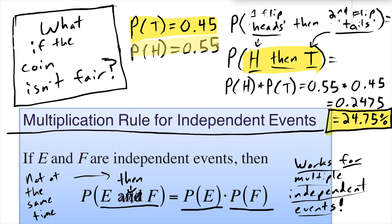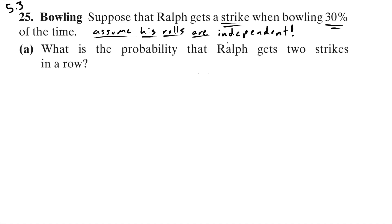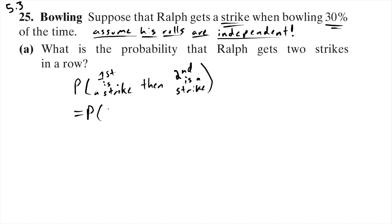This is a tool where we don't need equally likely outcomes — we just need independent outcomes, and coin flips are independent. Let's look at another example from section 5.3, number 25. Ralph is bowling, and 30% of the time he gets a strike. What is the probability that Ralph gets two strikes in a row? We need to assume his rolls are independent — whatever happens on the first roll doesn't affect the second.